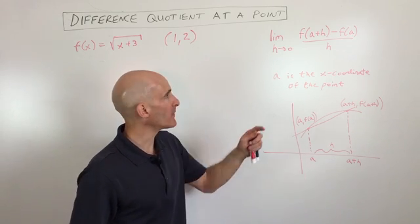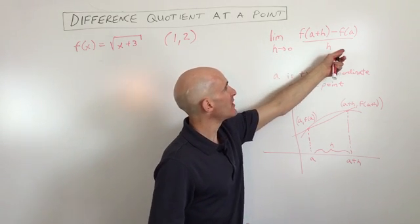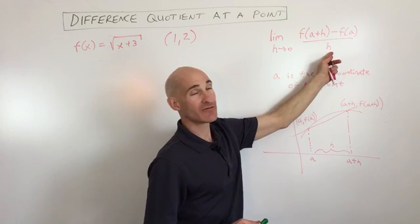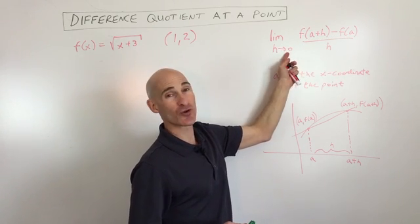slope at that one particular point. So here's the formula we're going to be using right here. It's f of a plus h minus f of a divided by h, and it's the limit as h approaches zero.